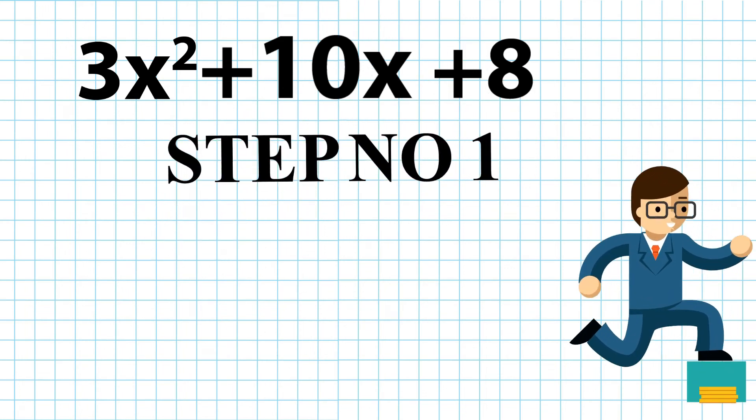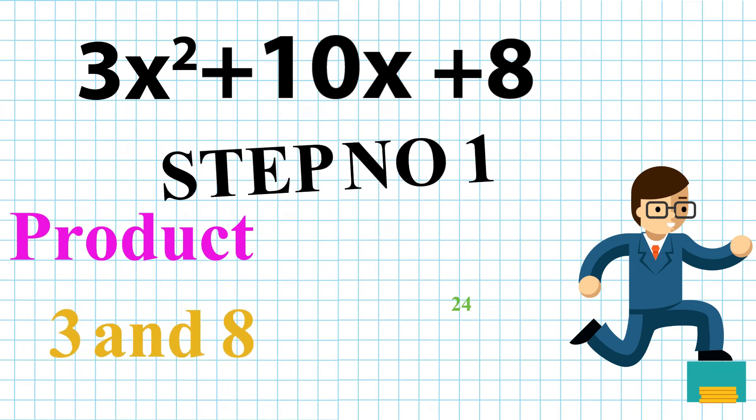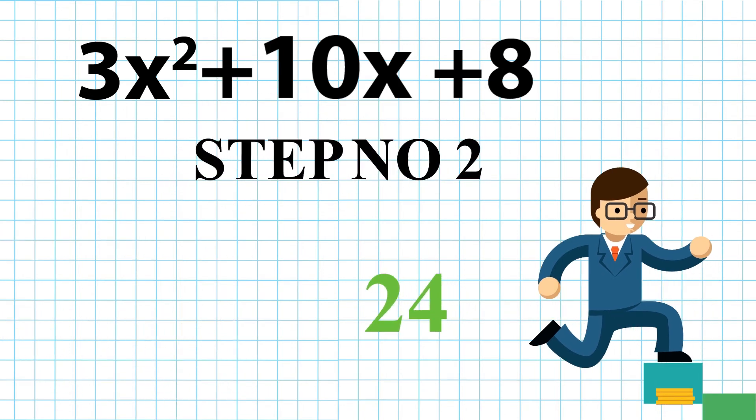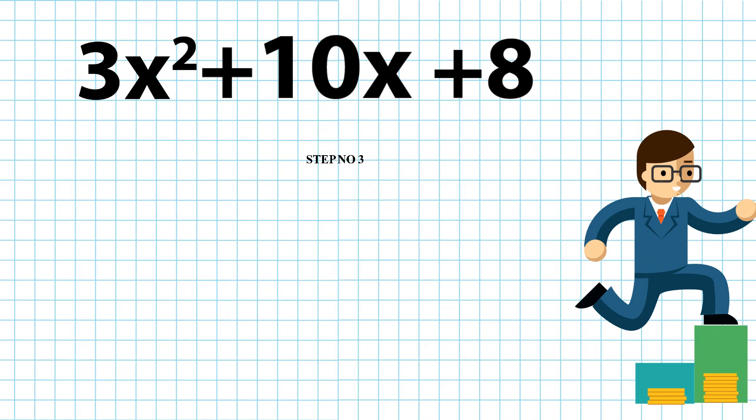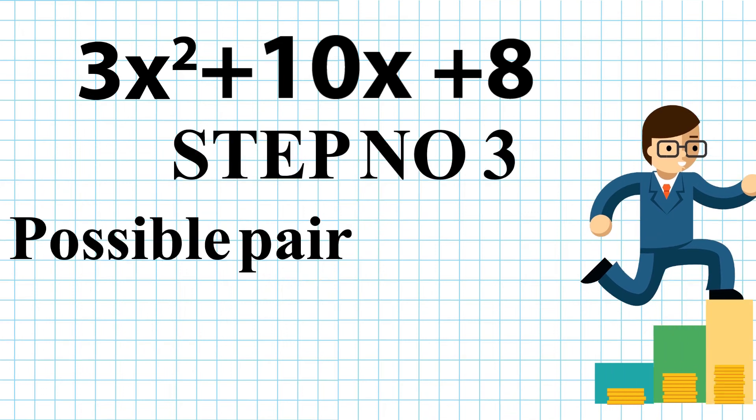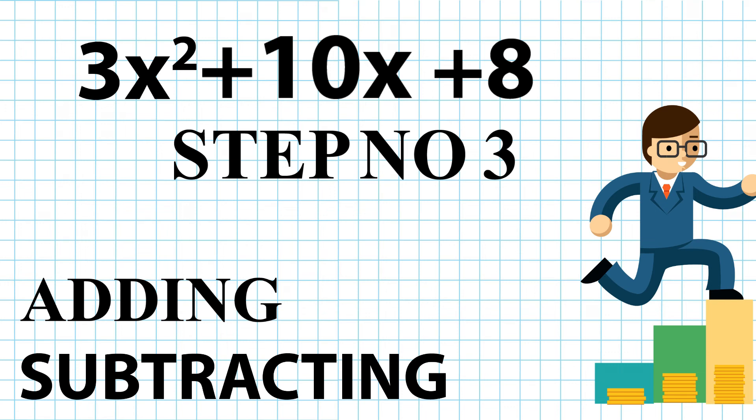Step number 1. The product of 3 and 8 is 24. All the factors of 24 are 2 and 12, 4 and 6, 3 and 8. Step number 3. Find the best possible pair by checking if we can find 24 by adding or subtracting the pairs.